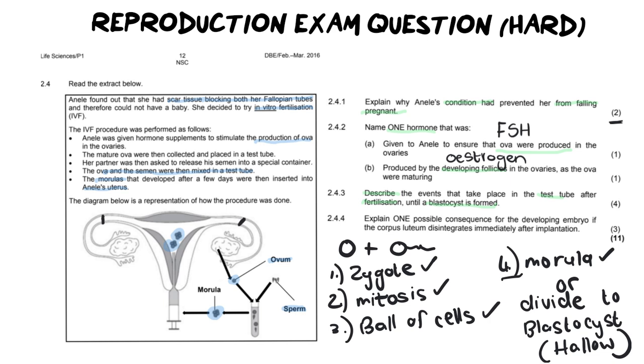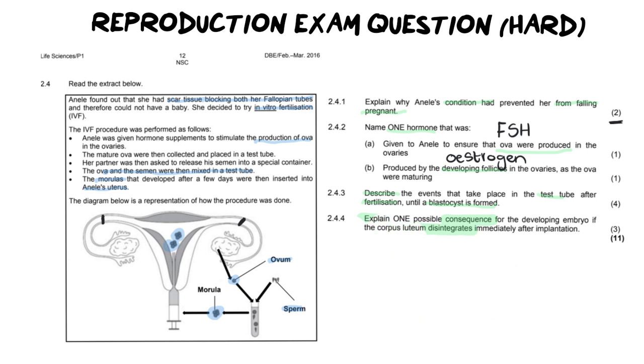Moving into our last question. Now it says, explain one possible consequence for developing an embryo if the corpus luteum disintegrates immediately after implantation. Now you are not going to be able to answer this question if you don't know what the corpus luteum does. So this is a big deal. The corpus luteum is the structure that secretes progesterone. And if we've forgotten, progesterone is the pregnancy hormone. It's what maintains the pregnancy. So what is the possible consequence? And you must explain it for three marks. That means you need to have a statement, and then you need to follow it with two reasons.